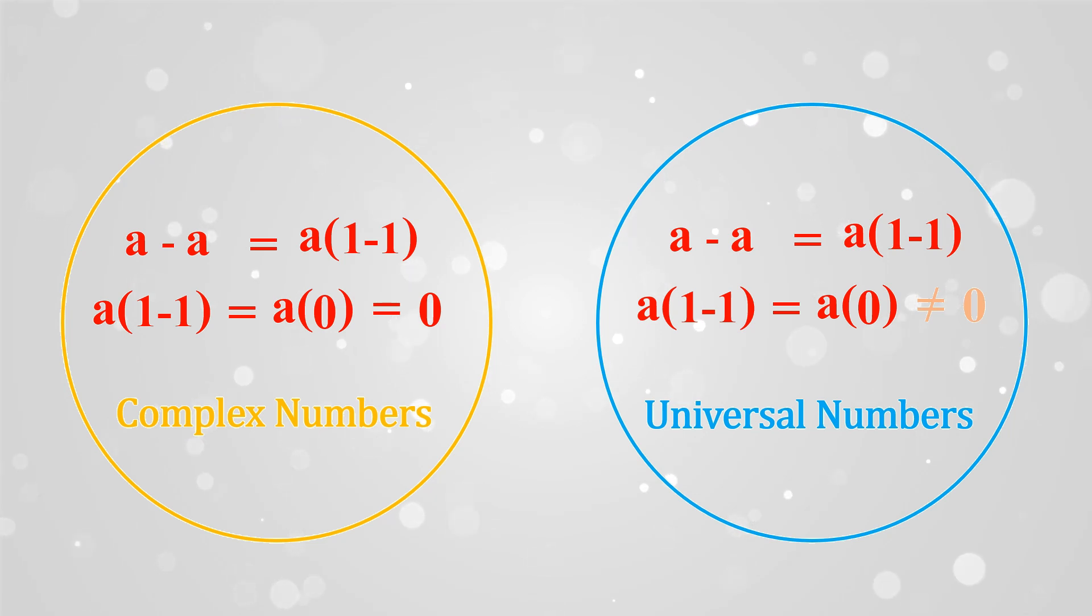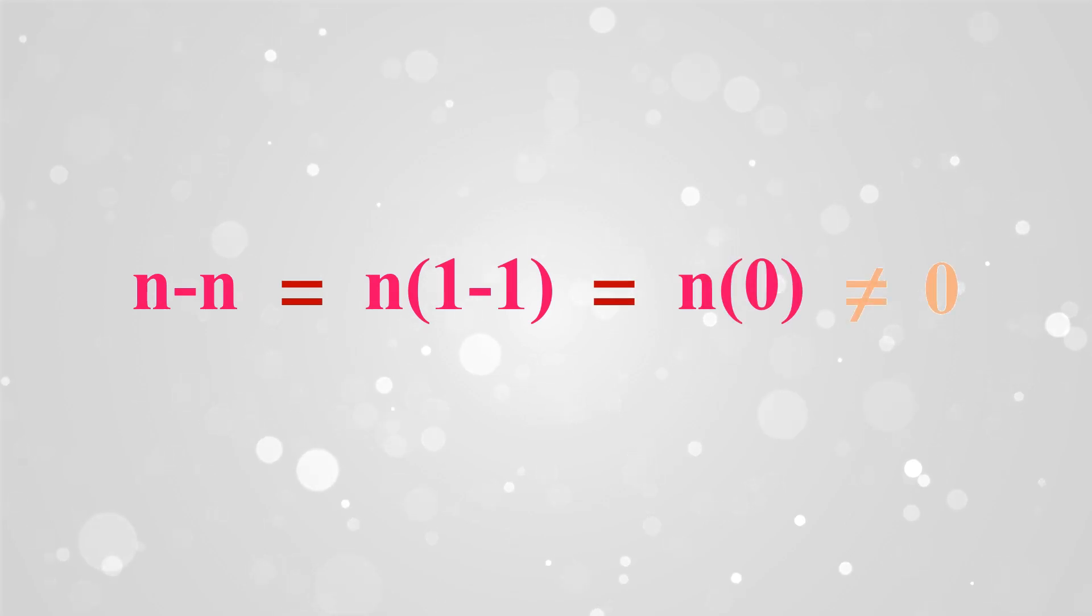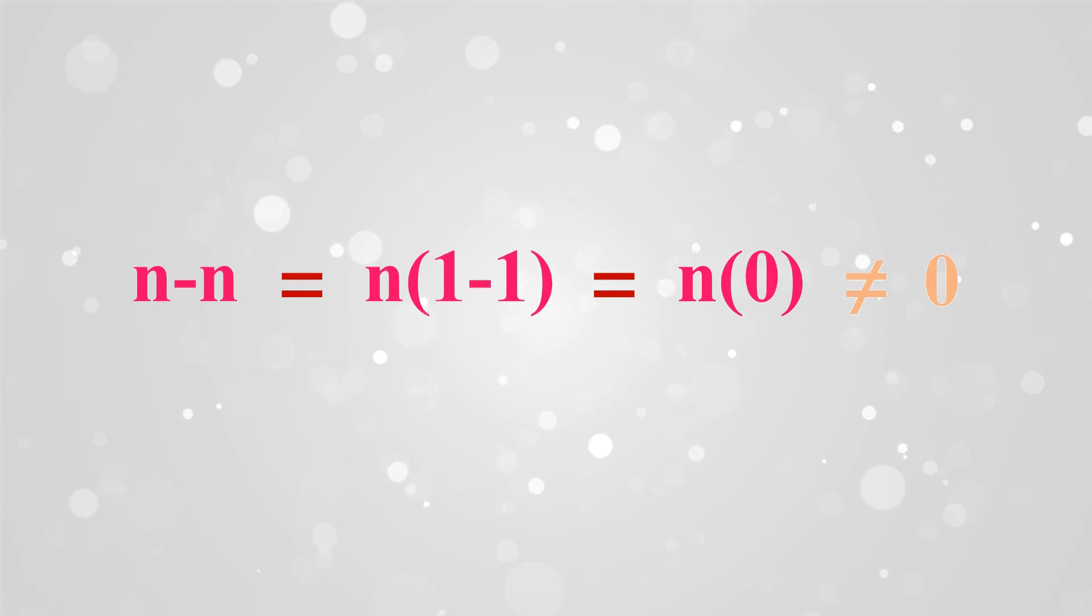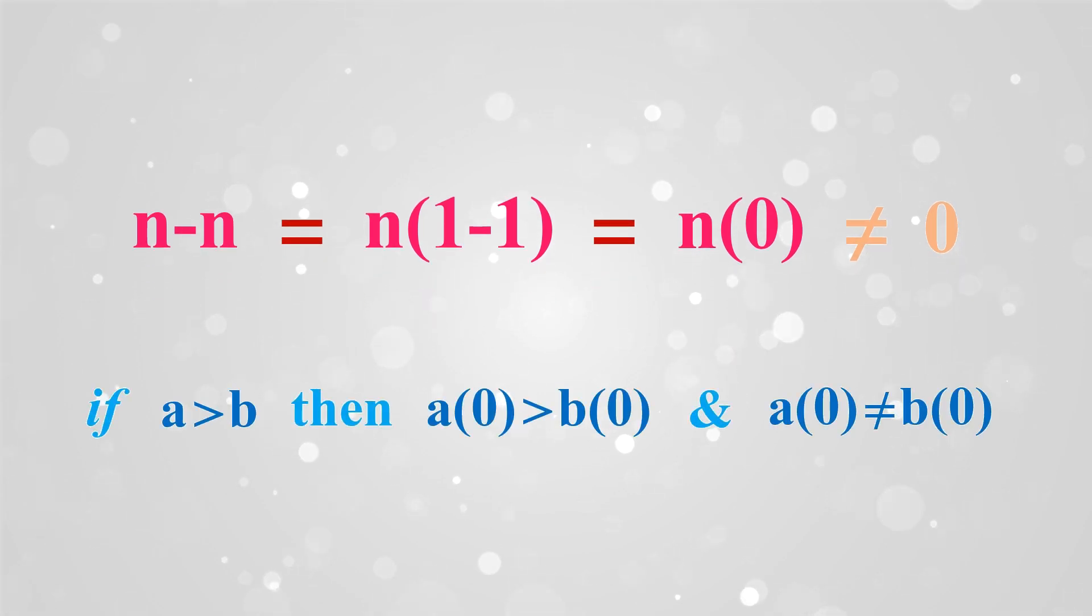And similarly for infinity. So the universal number domain follows this unique rule on priority, and all rules of complex numbers and real number systems are also adopted that don't contradict with this priority rule. And to maintain this logic and operate effectively, its fundamentals are created in the universal number domain.